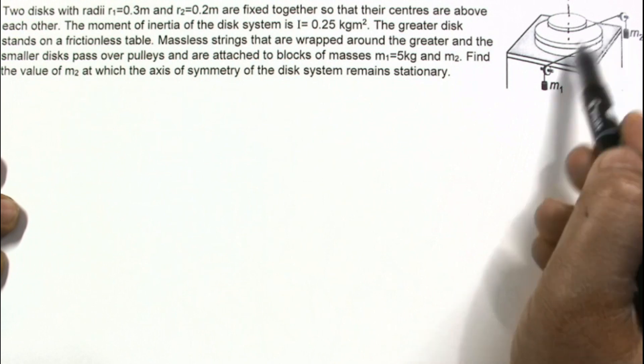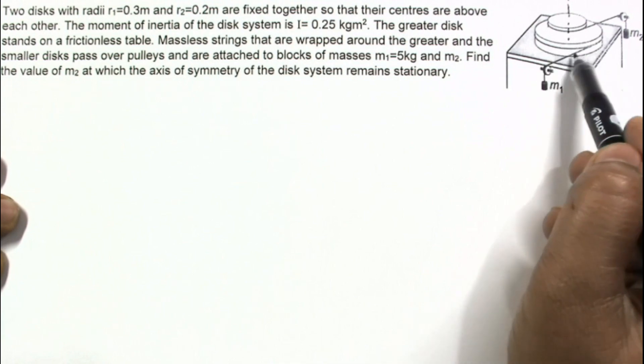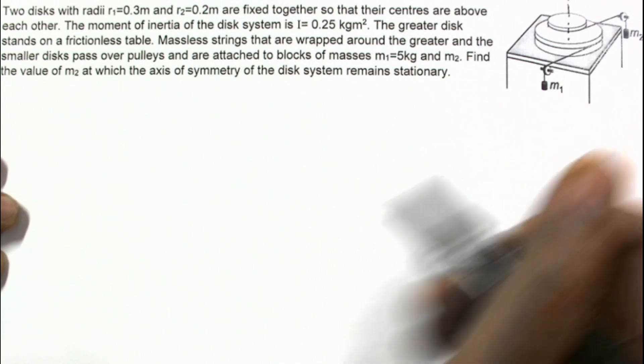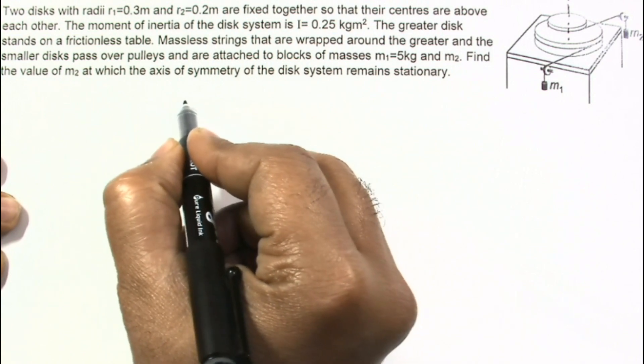The forces are due to this tension. This is string and there is no friction, so only horizontal forces are this tension and this tension. Let us make the diagram. I am making the diagram from top view.